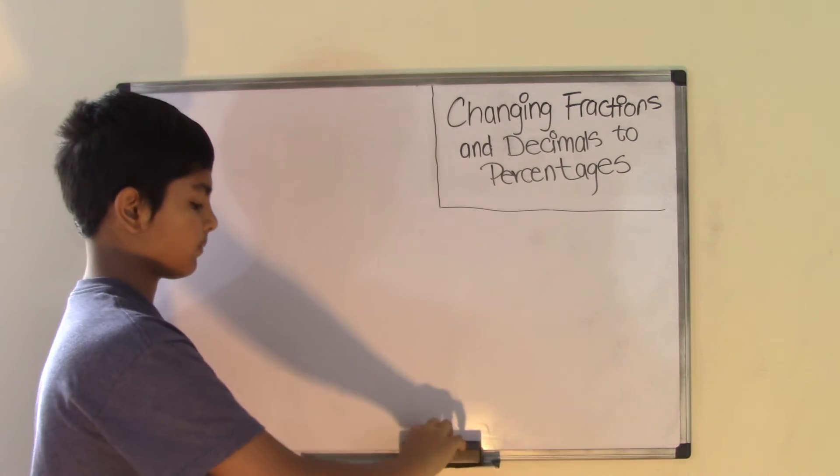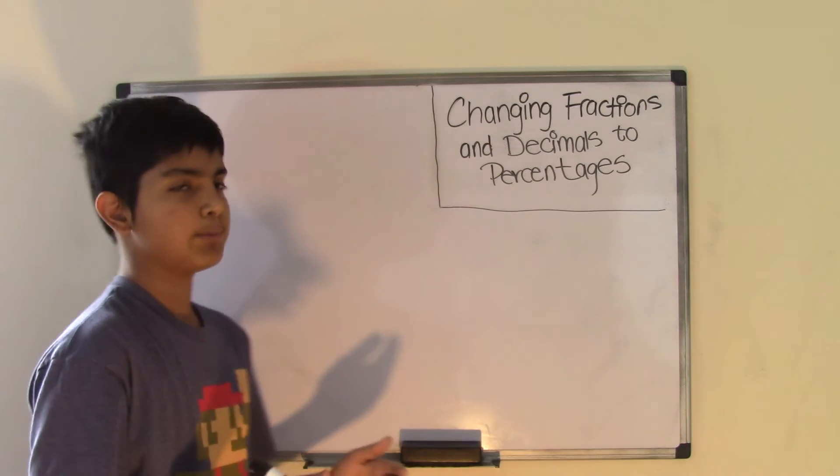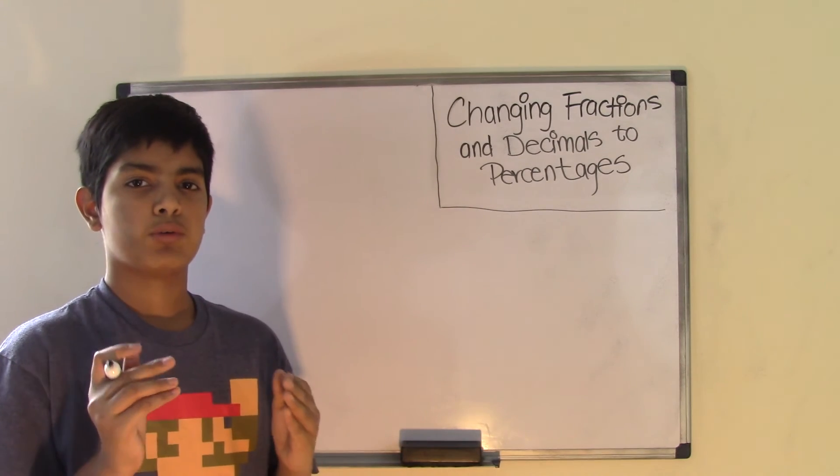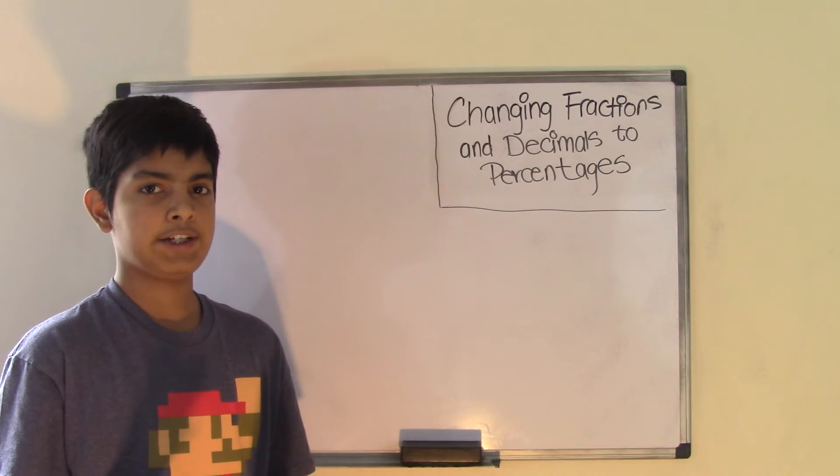Now let's talk about decimals. Decimal numbers are numbers that are something out of 100. So we already know that.